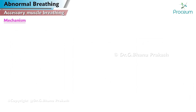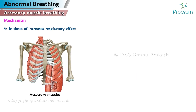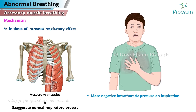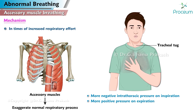Mechanism of accessory muscle breathing: In times of increased respiratory effort, the accessory muscles of breathing are enlisted to exaggerate the normal respiratory process. Their use can create more negative intrathoracic pressure on inspiration, pulling more air in and possibly causing tracheal tug, and more positive pressure on expiration, pushing air out.